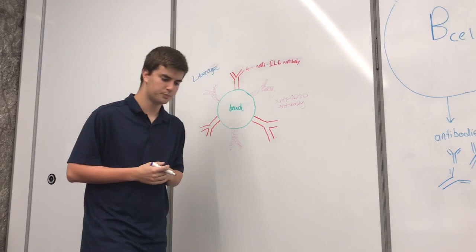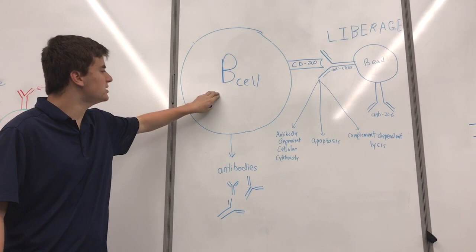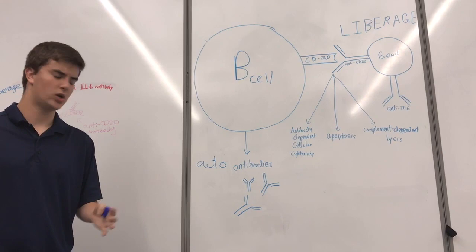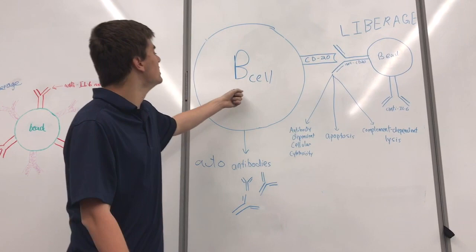Now, in individuals suffering from SLE, as well as all of us, B cells are an immune cell which produce antibodies. In someone suffering from SLE, these are autoantibodies or antinuclear antibodies which bind to the body's own cells, can create immune complexes, and overall cause a lot of problems.